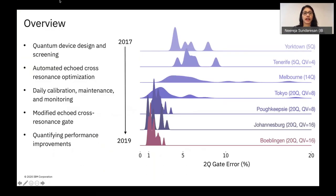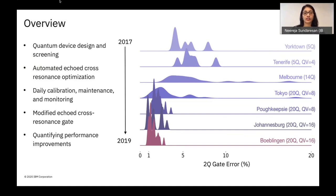In this talk, I will touch upon changes we've adopted in the design and screening process, what we've learned about automated calibration and optimization of gate parameters, how we try to maintain the consistency and performance of the machines day-to-day, I'll introduce a modified cross-resonance gate that we're widely using in these systems, and hopefully by the end of the talk I'll have given you a good overview of how we realize performance improvements in different metrics, for example, reduction in two-qubit error.